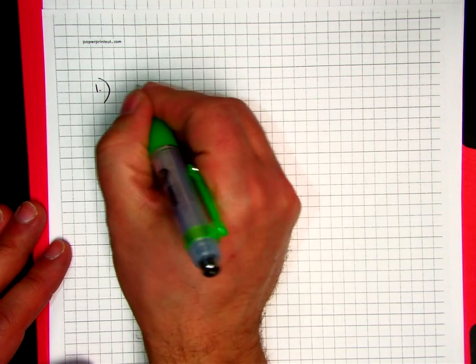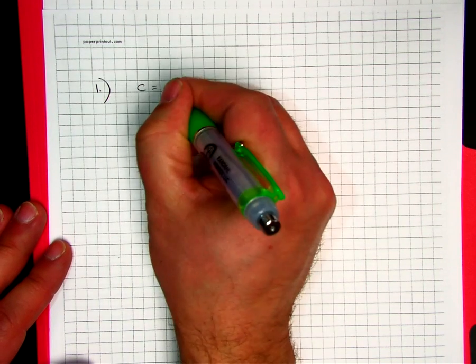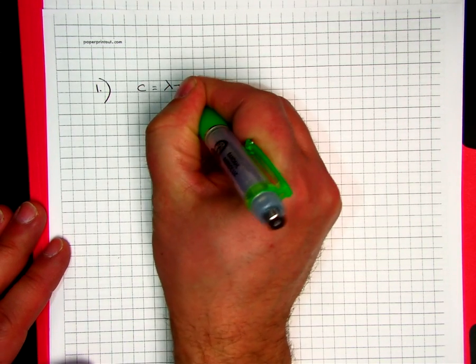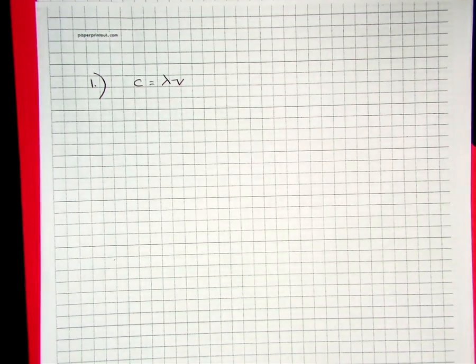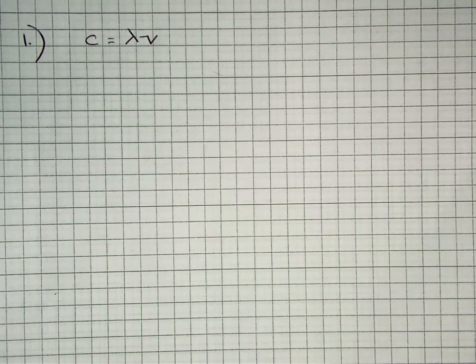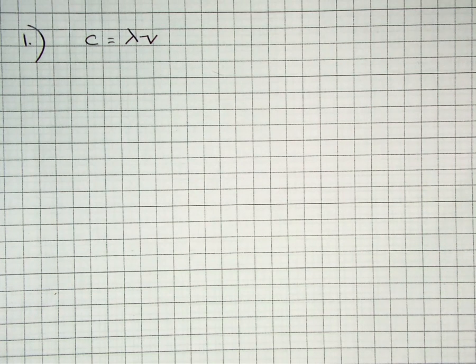Now, we have to go back and always start with this formula to solve any of the problems that are going to come in this particular section. C equals lambda times nu, wavelength times frequency. Which one are we given in this problem? Of those three symbols, in number one on page 121, which one are we given?